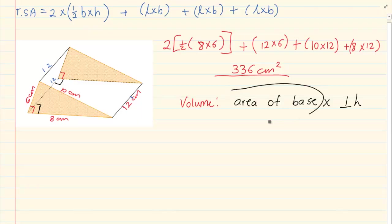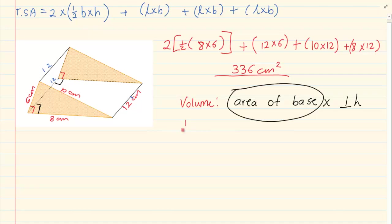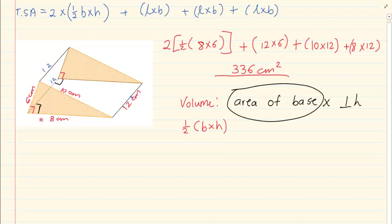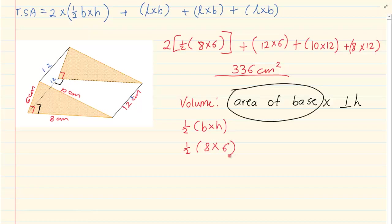Now what is the area of the base? The area of the base is a triangle which is half base times height. If we are working with the triangle it is half 8 times 6. Then it is times the height of the prism.